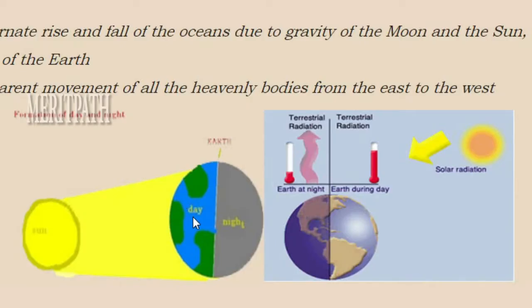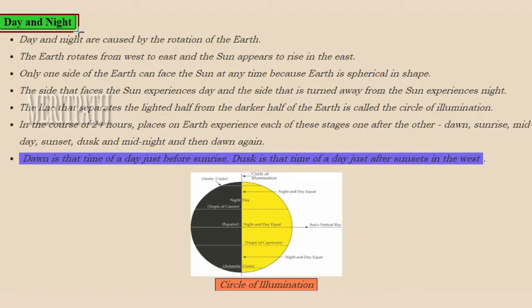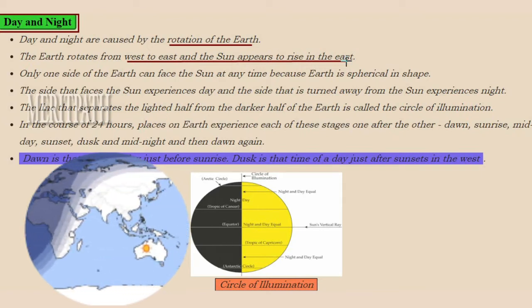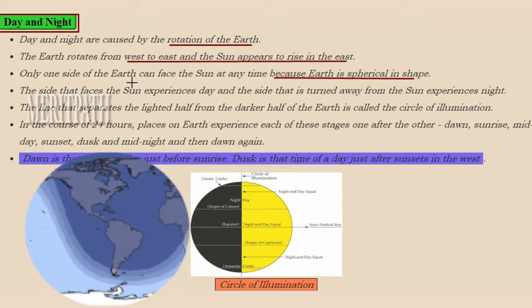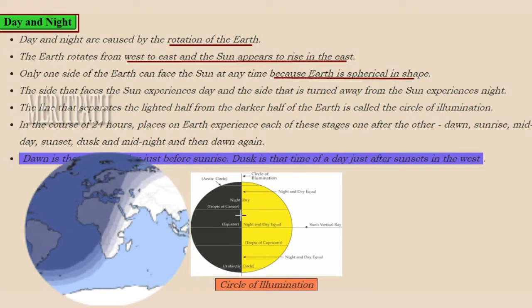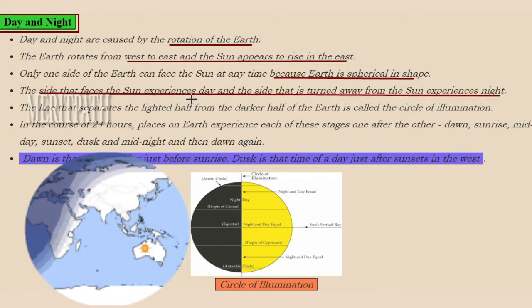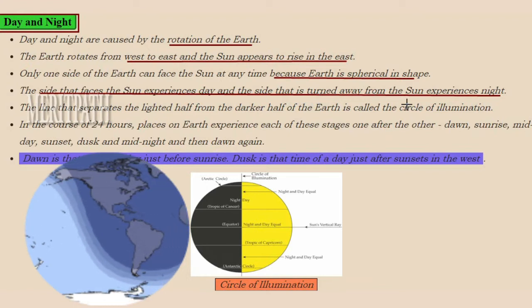In this image, you can see the formation of day and night because of the rotation of the earth. One part of the earth is in daytime and the other is in night time. Day and night are caused because of rotation of the earth. When earth rotates from west to east, the sun rises in the east — that is the daytime. Because earth is spherical in shape, only one side can face the sun at a time. The part of the earth which faces the sun experiences daytime, and the part turned away from the sun experiences night time.